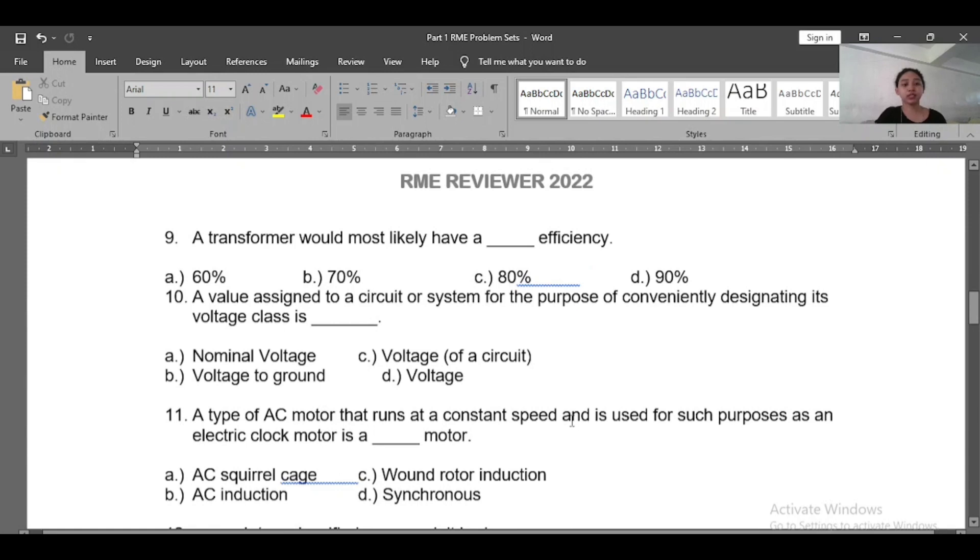Number nine: A transformer would most likely have a blank efficiency. So what is the efficiency of a transformer? The efficiency of our transformer will be 90 percent. That is the ideal efficiency of a transformer.